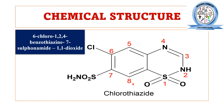At position one we have the sulfone group, position two has NH, position four has nitrogen again, and at position six we have the halogen atom chlorine — an electronegative atom. At position seven we have the sulfonamido group. On this basis, the chemical name is 6-chloro-1,2,4-benzothiazine-7-sulfonamide 1,1-dioxide, where 1,2,4 represents the heteroatoms in the thiazide ring and 1,1-dioxide refers to the sulfone group.